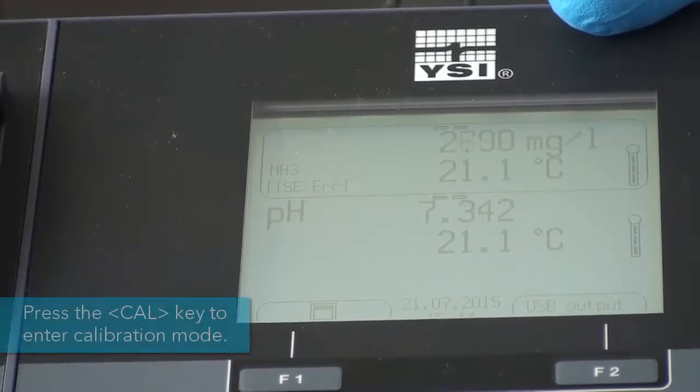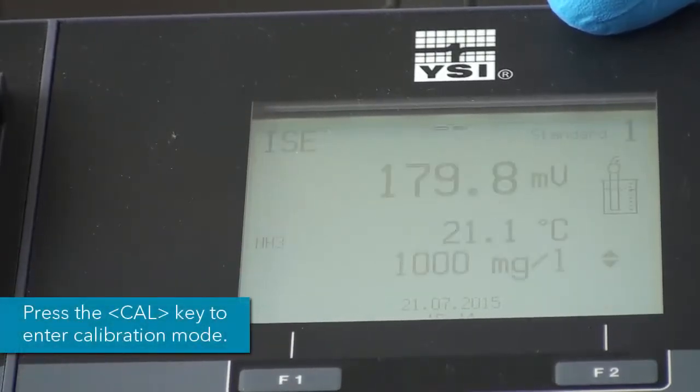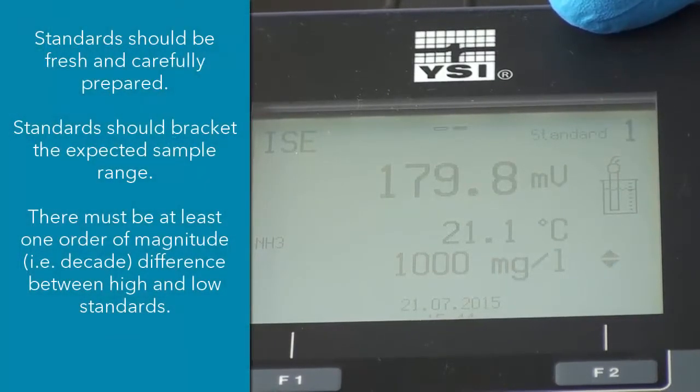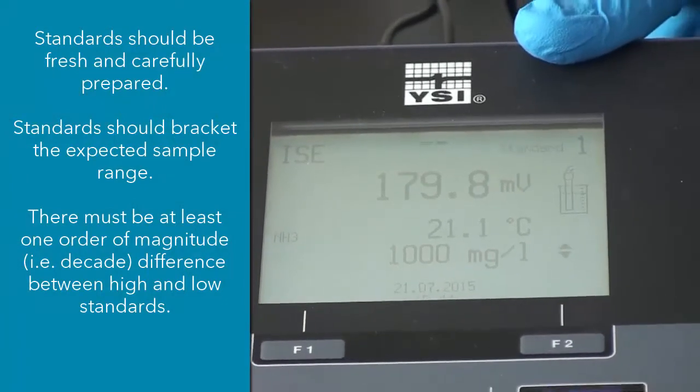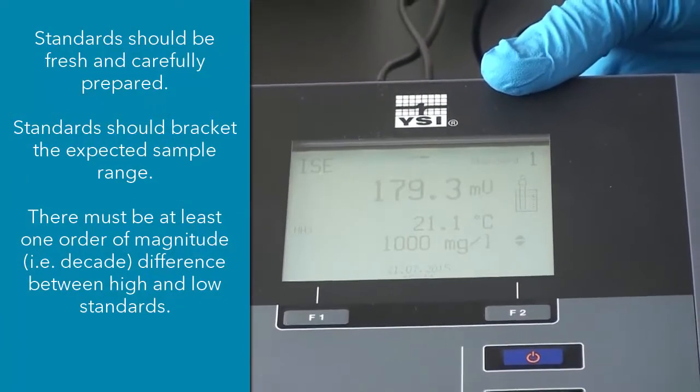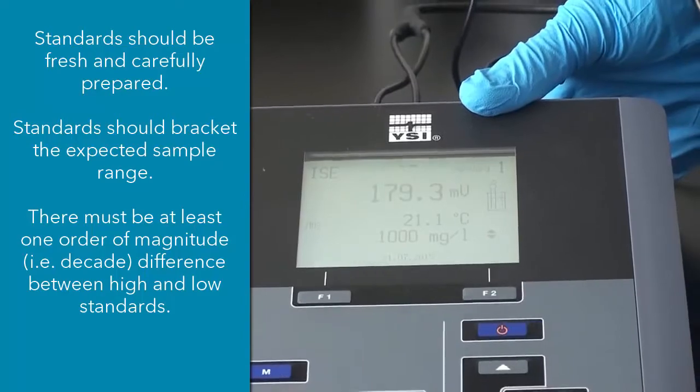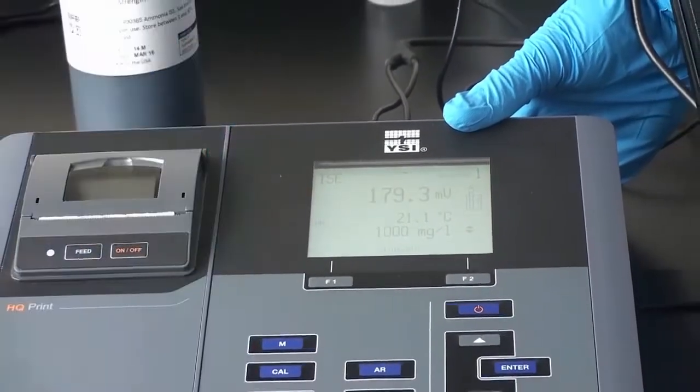So now we will want to go into the calibration mode. You will want to use standards that bracket your expected sample range. So I am going to calibrate using 10 mg per liter and 100 mg per liter standards. So that would work really well if your expected measurement was about 50 mg per liter.